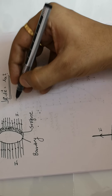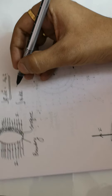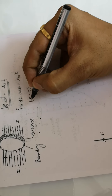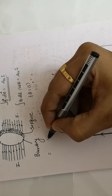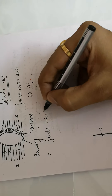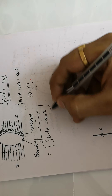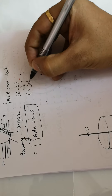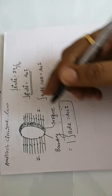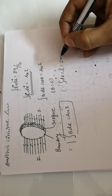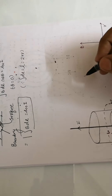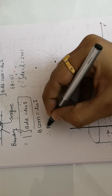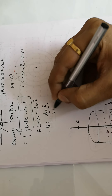Now let's solve the integral form. The integration of B dot dl expands to B dl cos theta equals mu zero into I. When theta equals zero (the ideal tangential condition), cos zero is one, so the integration of B dl equals mu zero into I. Since the integral of dl around a circular path of radius r is 2 pi r, we get B times 2 pi r equals mu zero I, giving us B equals mu zero I divided by 2 pi r.